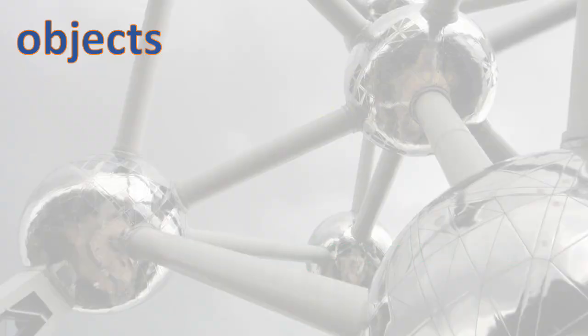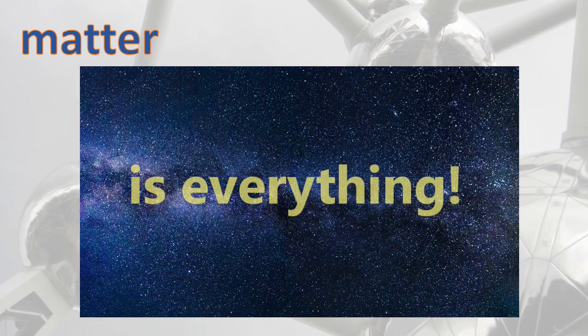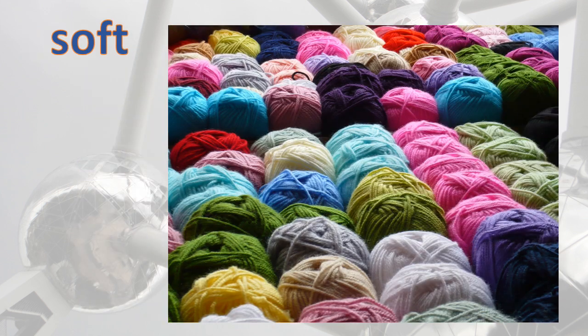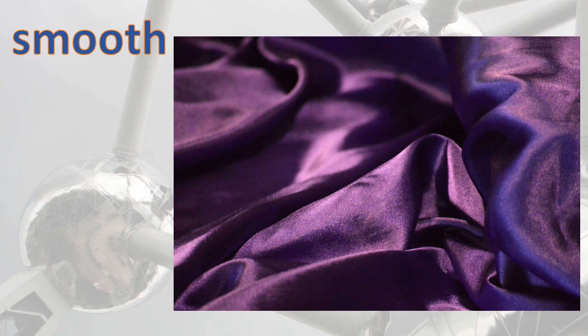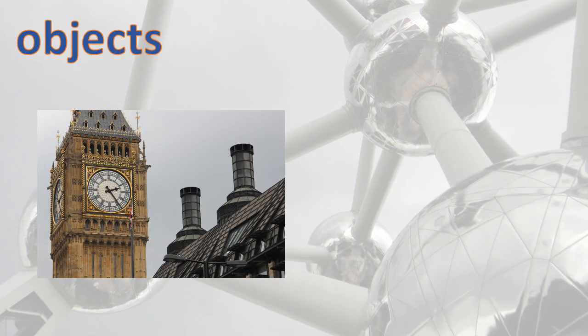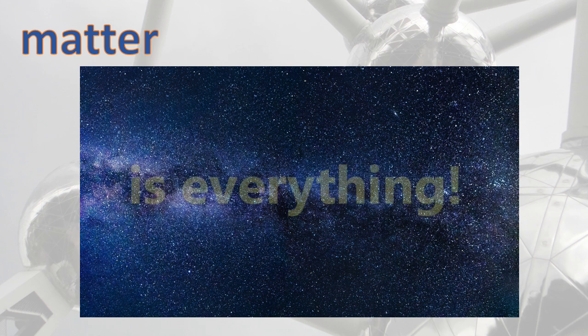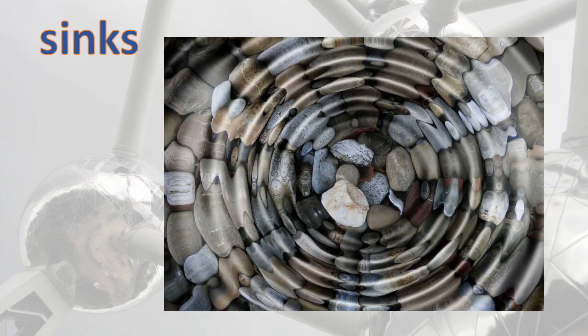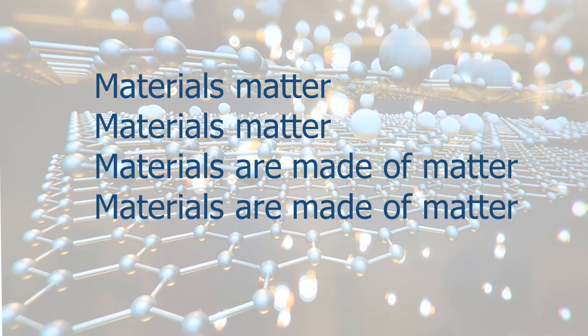Objects are things, a clock, a TV. Matter makes them up — all things, you and me. Some materials are hard, and some are soft, and some are smooth. Some are rough. Objects are things, like a clock, a TV. Matter makes them up — all things, you and me. Some materials are shiny, some are dull. Some float, some sink like a stone. Materials matter. Materials matter. Materials matter. Materials are made of matter. Materials are made of matter.